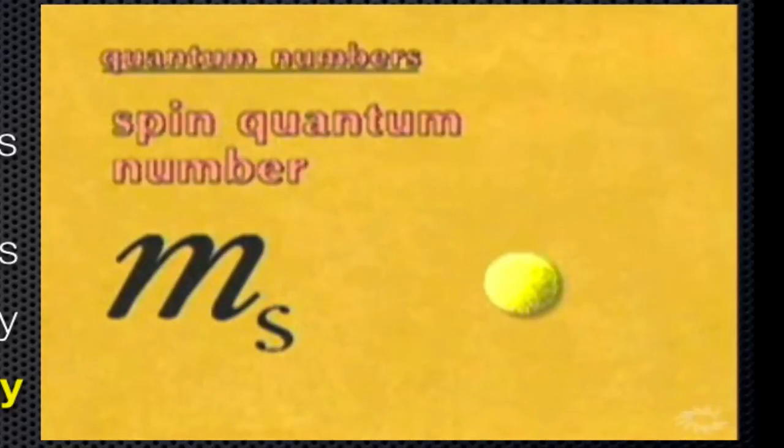And finally, the fourth quantum number refers to the spin of the electron. An electron can be thought of as spinning on its axis in two possible directions. This means an orbital can only accommodate two electrons, each spinning in opposite directions.